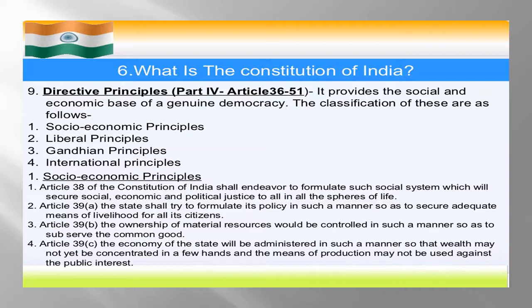Article 39a: The state shall try to formulate its policy in such a manner as to ensure adequate means of livelihood for all its citizens — government का काम यह होगा कि वो ऐसी policies formulate करे जिससे देश में रहने वाले हर इंसान का development हो सके, सिर्फ rich या poor के लिए नहीं। Article 39b: The ownership of material resources would be controlled in such a manner so as to subserve the common good — material resources को government control करेगी, जैसे petroleum products। Article 39b (4th): The economy of the state will be administered such that wealth may not be centralized or concentrated in a few hands and means of production may not be used against the public interest।